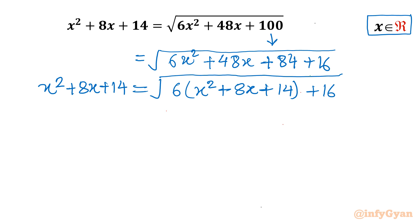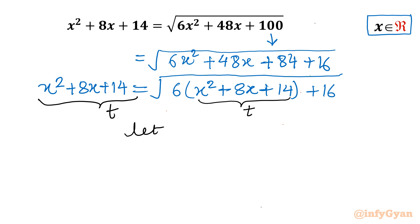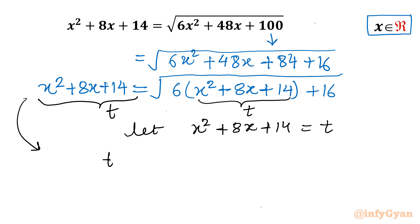You can easily see that our substitution is x² + 8x + 14. So let us write: let x² + 8x + 14 = t. Our equation will then become t = √(6t + 16).